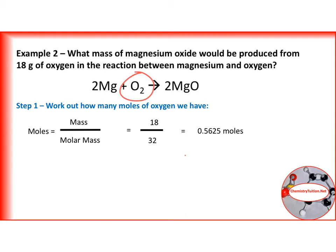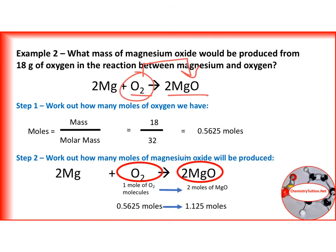Step two. We then look at the equation and we look to see the ratio between what we have to what we're going to, which is one of those makes two of those. So if we give that a go, we're going to need to double the number of moles of O2 to find the moles of MgO.